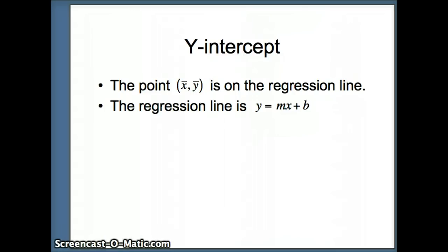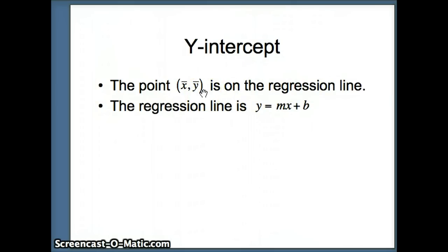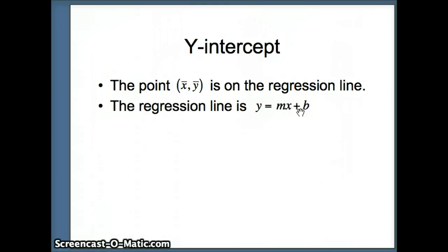To get the y-intercept, we have to recognize that the point x-bar comma y-bar is going to be on the regression line. Remember, x-bar, y-bar is not in our data set, but constructing that point, it must be on the regression line. So we're going to use the standard notation from basic algebra, y equals mx plus b, and plug x-bar and y-bar into that to solve for b.